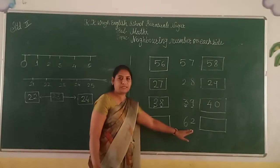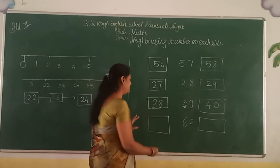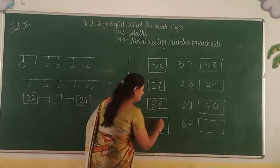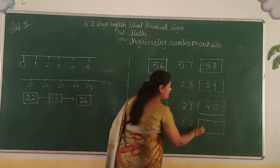Number 62 is here. Before number is 61, and the after number is 63.